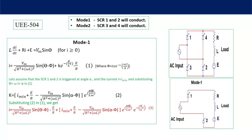K is a constant to be found based on the initial or final condition of the circuit. Now let's assume thyristors 1 and 2 are fired at firing angle α. From that point, current will start building up and that current at the start is the minimum current, i_min. Substituting these values into equation 1, we get K = i_min + E/R − (Vm/Z)·sin(α − φ)·e^(Rα/Lω). Once K is found, substituting back, the final current expression is: i = (Vm/Z)·sin(θ − φ) − E/R + [i_min + E/R − (Vm/Z)·sin(α − φ)]·e^(−Rt/L).